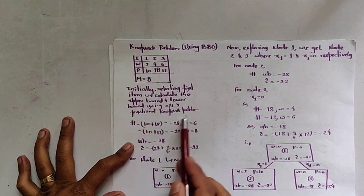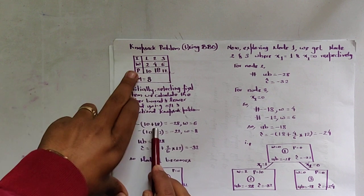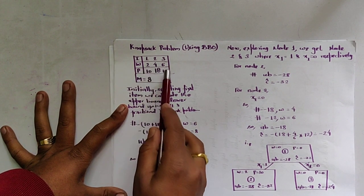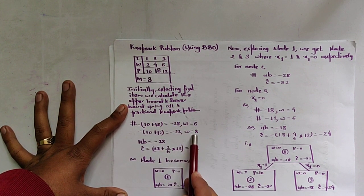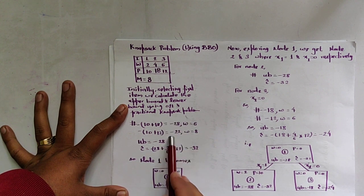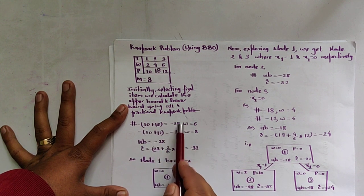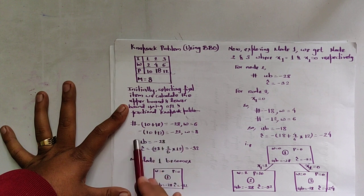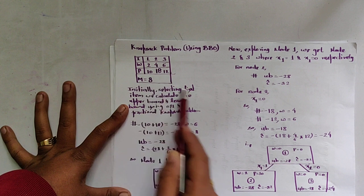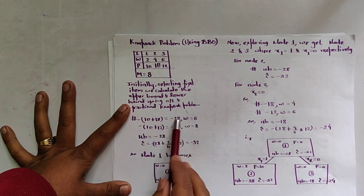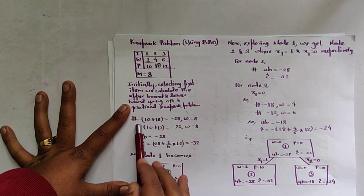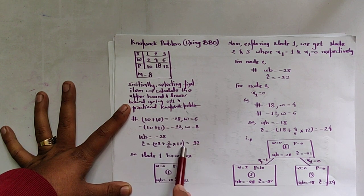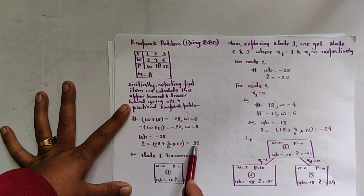By selecting the first item, the possible combinations are: first and second items giving profit 10+18=28 with weight 2+4=6; and first and third items giving profit 10+12=22 with weight 8. The minimum value between -28 and -22 is -28, so that is the upper bound. Since the largest weight of 8 equals the given capacity, we select the first and second items. With weight 6, remaining capacity is 2, so fractional knapsack gives 2/6 × 12 = 4 additional profit, making the lower bound -32.